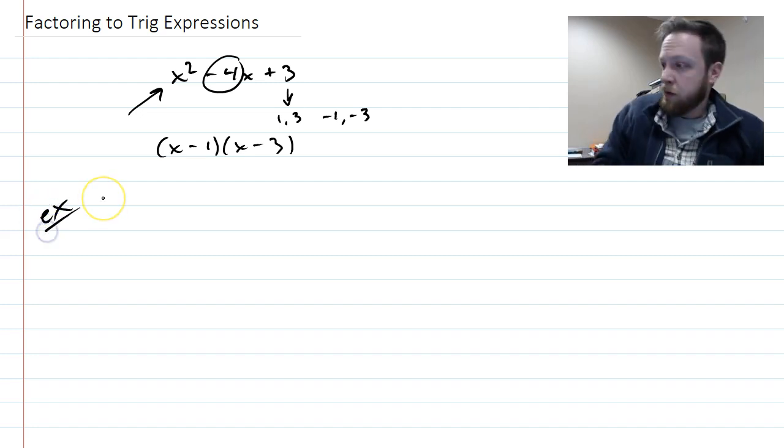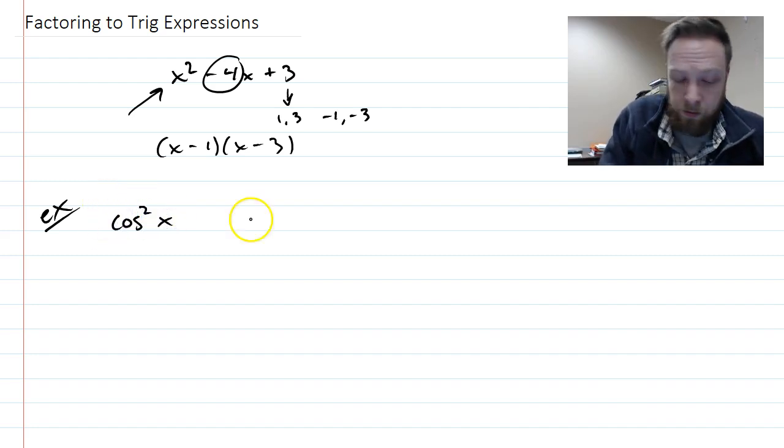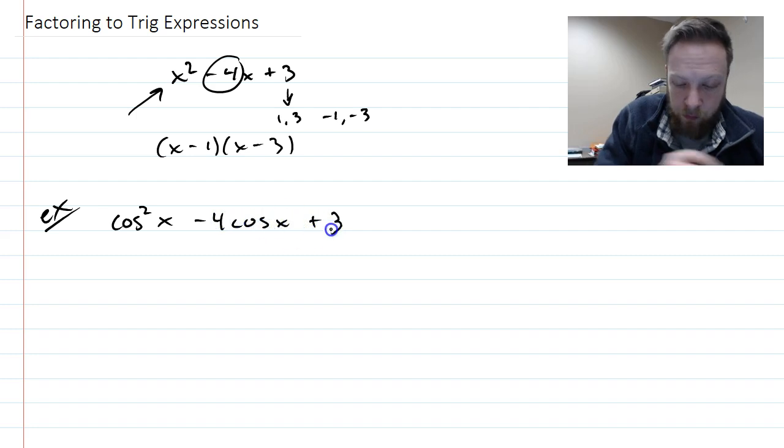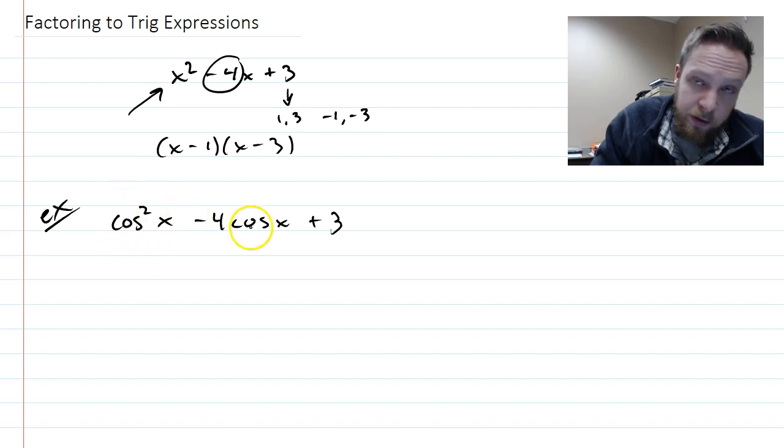The example I want to show you, though, is involving trig functions. It is exactly the same as what we just did. It just has a cosine in there. And you'll notice this is like x squared. This is like minus 4x. And this is 3.